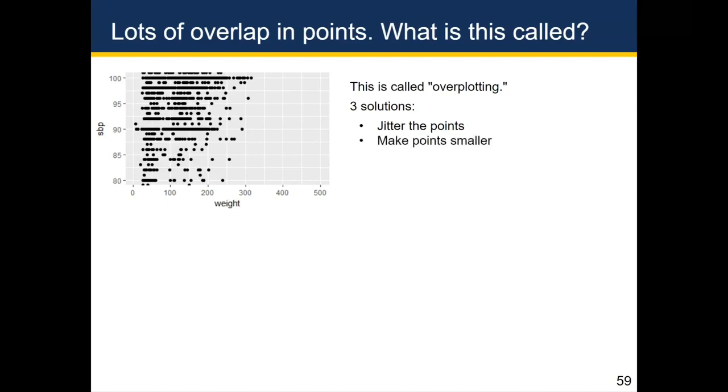Another solution is to make the points smaller. So if two points are close together and overlapping, by shrinking all the points, you'll physically reduce the size of the points, thereby reducing the amount of overlap they can have.